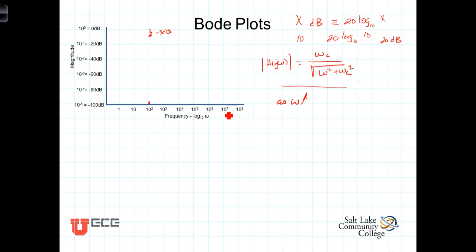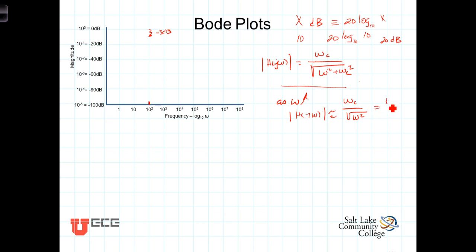Within this compressed scale, you don't have to go very far along the axis to see large increases in frequency. So as omega increases, the magnitude |H(jω)| becomes very close to ω_c over the square root of ω², which is just ω_c over ω. This is an approximation, but as omega gets bigger, the frequency response function appears to be falling off as 1/ω.